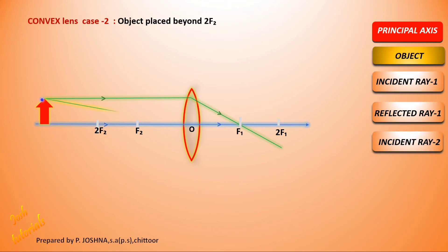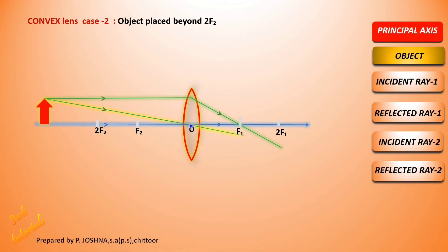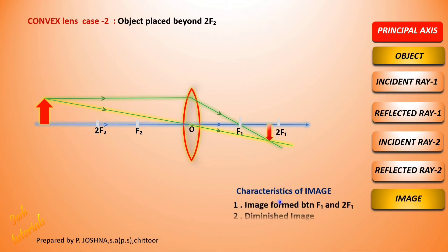The second incident ray is drawn through the optic center — since a ray through the optic center goes undeviated, it travels straight away. The two refracted rays meet at a point. The image is formed between F1 and 2F1, is diminished in size, inverted, and real — it can be caught on a screen.